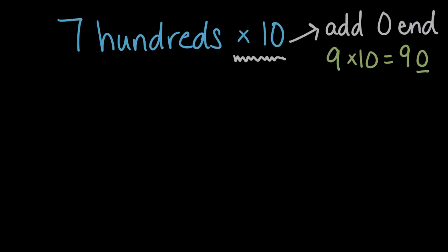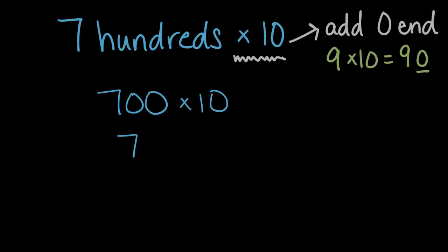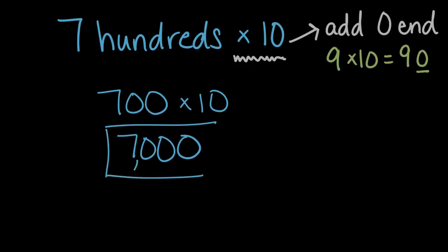So let's use that pattern to try to solve. Here we have seven hundreds — seven times we have a hundred, or seven hundred — and we're multiplying again times ten. Using this pattern, our solution will add a zero at the end. So if we had seven hundred ten times, we would have seven hundred with a zero on the end, or 7,000. So seven hundred times ten is equal to 7,000.